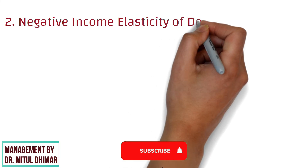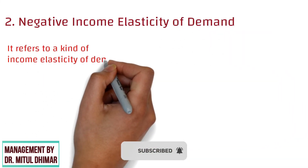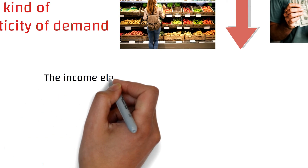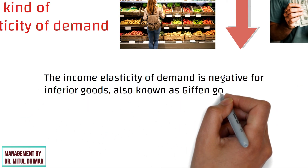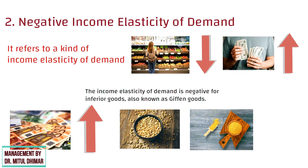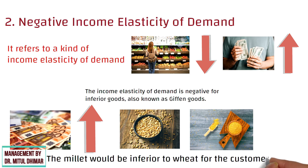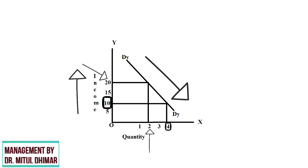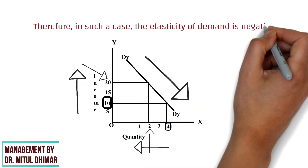The second type is negative income elasticity of demand. It refers to a kind of income elasticity of demand in which the demand for a product decreases with increase in consumers' income. The income elasticity of demand is negative for inferior goods, also known as Giffen goods. For example, if the income of a consumer increases, he would prefer to purchase wheat instead of millet. In such a case, the millet would be inferior to wheat for the customer. This figure shows that when the income is Rs 10, the demand for goods is 4 units; when the income increases to Rs 20, the demand is 2 units. The slope of the curve is downward from left to right, which indicates that the increase in income causes decrease in demand and vice versa. Therefore, in such a case, the elasticity of demand is negative.